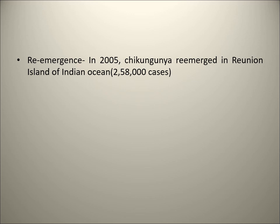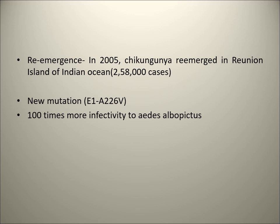In 2005 Chikungunya re-emerged on Reunion Island in the Indian Ocean where more than two lakh cases were reported. The reason for re-emergence was a new mutation in the virus: at position 226 in the E1 gene, the amino acid was changed from alanine to valine (A226V mutation). This made the virus 100 times more infective to Aedes albopictus.